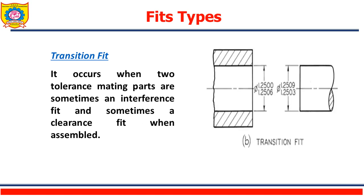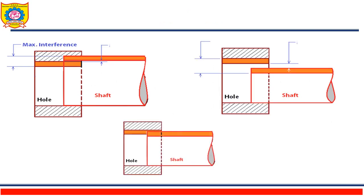The next one is transition fit. Transition fit occurs when two toleranced mating parts are sometimes in interference fit and sometimes in clearance fit when assembled. If we see the figure carefully, the hole and shaft sizes are such that they create either interference or clearance, but it is very small. Such a fit is called a transition fit. The figure shows maximum interference, minimum interference, maximum clearance, minimum clearance, and transition for the shafts.